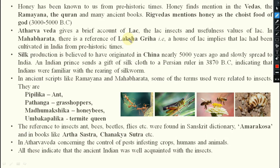In Ancient India, some basic important things were there — like lac (called 'lacko' in Hindi and Odia), honey ('mohu'), and silk ('resum'). These were used by our ancestors. The use of honey was mentioned in the Quran, Ramayana, and everywhere. It has been found in different ancient books like the Rig Veda, where honey is called the choice food of God, mentioned in Panchamrita and all.